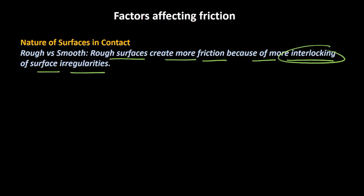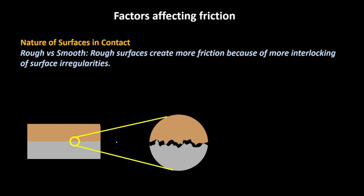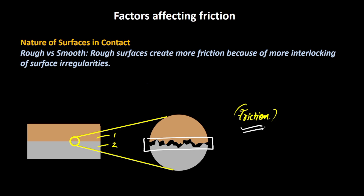Let's understand what we mean by the interlocking of surface irregularities. Consider two surfaces — surface one trying to move over surface two. There is a relative motion between them, and because of this relative motion, the force of friction comes into picture. The reason friction occurs is the irregularities between surfaces. From a microscopic level, surfaces are very irregular. As irregularity increases — as in a rough surface — friction increases. In a smooth surface, the irregularities are less, and hence friction is less.